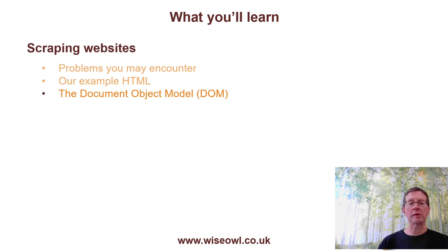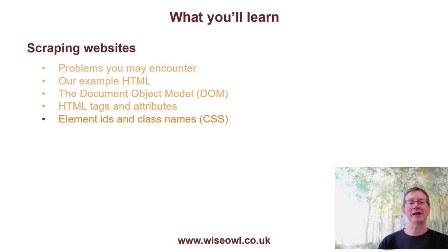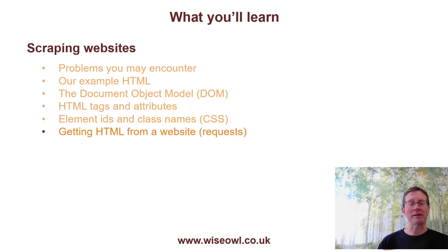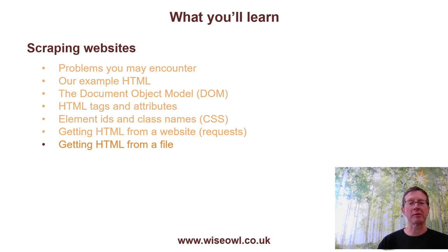We'll look at the document object model — how an HTML page is constructed into different sections — and at HTML tags and attributes. Tags are things like IMG for image, P for paragraph, div for division. We'll look at element IDs and class names, and how cascading stylesheets use them to impose formatting. Then we'll look at getting HTML from a website using the requests module, and from a file. Finally, we'll look at scraping using the Beautiful Soup module.